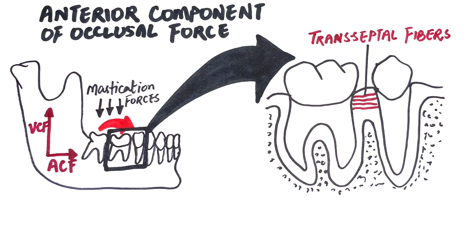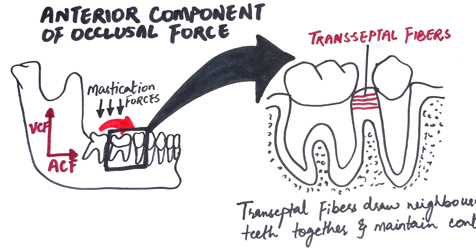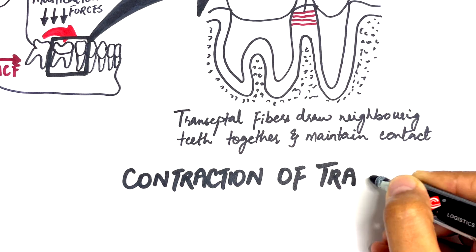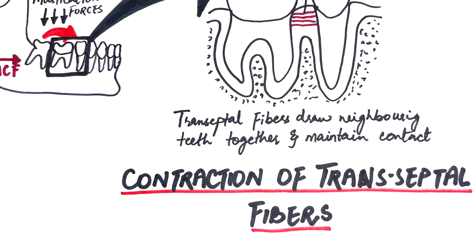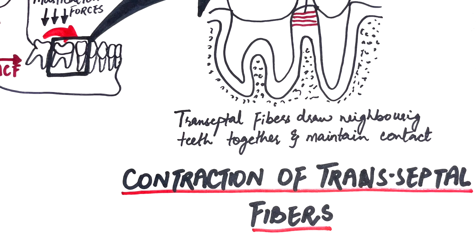The transseptal fibers of the PDL run between adjacent teeth across the alveolar process, drawing neighboring teeth together and maintaining contact between them. The fibers are capable of adaptation and hence remodel by collagen phagocytosis within the ligament. Studies show that grinding away proximal contacts provides room for a tooth to move, after which teeth move through the contraction of these fibers and re-establish interproximal contacts. This critical role of transseptal PDL fibers can be observed in long-term orthodontic treatment, where if retainers are not used, there is a risk of teeth relapsing back to their original positions due to incomplete remodeling of the PDL fibers. By using retainers, the teeth are stabilized until the PDL fibers completely remodel, ensuring long-term stability and alignment.